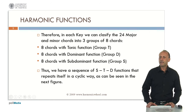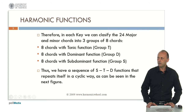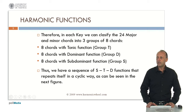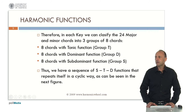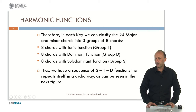Therefore, in each key — we started with C major key, but we can start with any other key — we can classify the 24 major and minor chords into three groups of eight chords each: a group with eight chords having a tonic function, called group T; another group with eight chords having a dominant harmonic function, called group D; and eight chords with subdominant harmonic function, called group S.